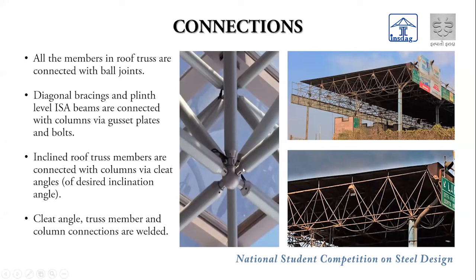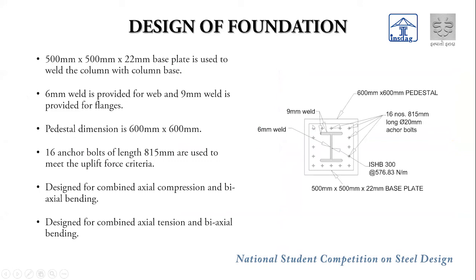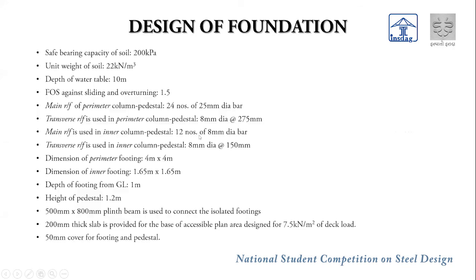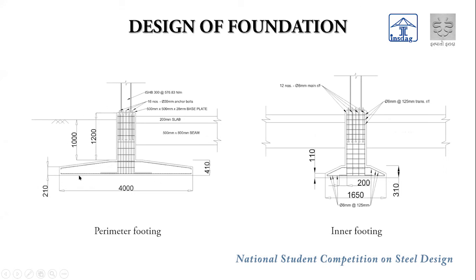Ball joint connections are used for roof truss members; gusset plates and bolting are used for plinth and other members. The base plate is 500×500×22mm with 9mm and 6mm welds, a pedestal of 600×600mm, and 16 anchor bolts of 18-15mm size to resist uplift. Footing dimensions are 4m×4m for perimeter columns and 1.65m×1.65m for inner columns, with a footing depth of 1m from ground level and a pedestal height of 1.2m.